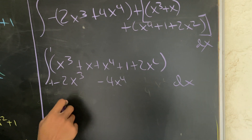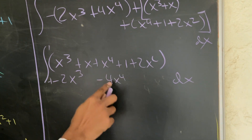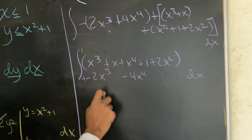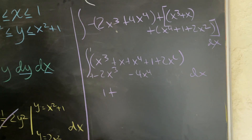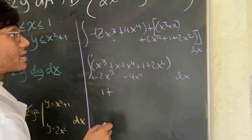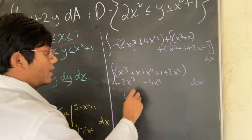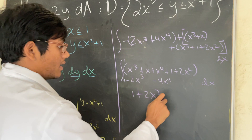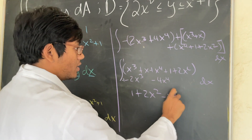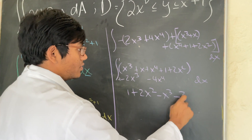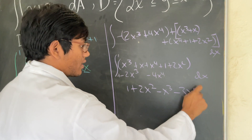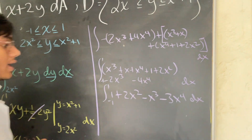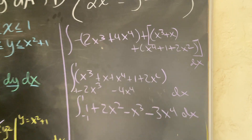Collecting like terms, we're left with: 1 plus 2x squared minus x cubed minus 3x to the fourth, dx, integrated from negative 1 to 1.